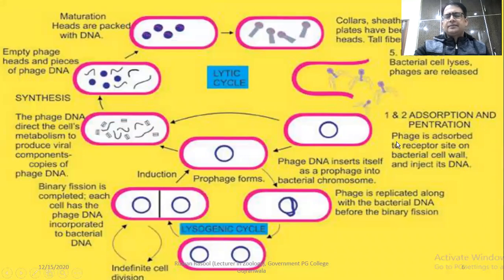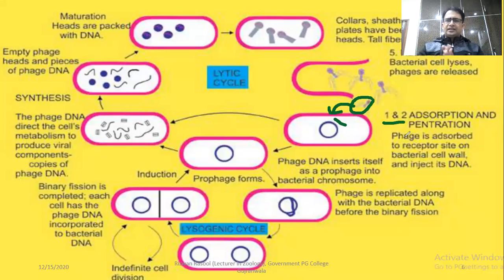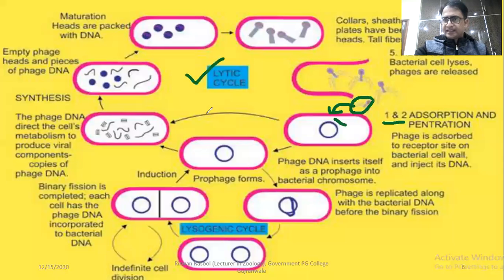A bacteriophage incorporates its DNA into the bacterial cell's circular chromosome. After DNA injection, there are two pathways for bacterial lysis. In the first pathway, the lytic cycle, the bacteria cannot divide but suddenly undergo lysis. In the second pathway, the lysogenic cycle, the bacterial cell divides and later transitions into the lytic cycle.